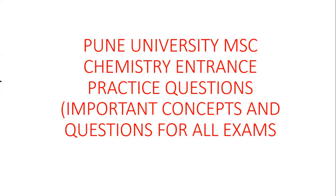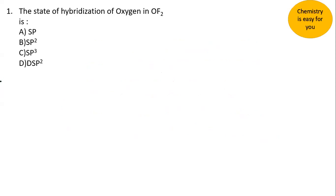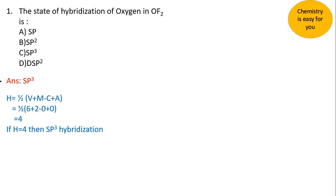Let's begin. The first question: the state of hybridization of oxygen in OF2. The options are sp, sp2, sp3, and dsp2. We have previously discussed shortcut methods to find the hybridization of a given molecule. The answer here is sp3, and let's see how we found this answer.